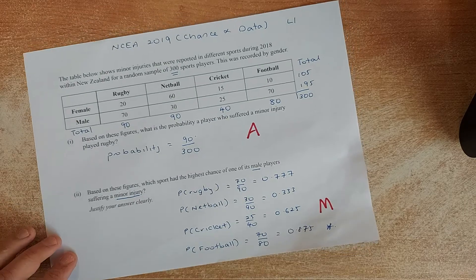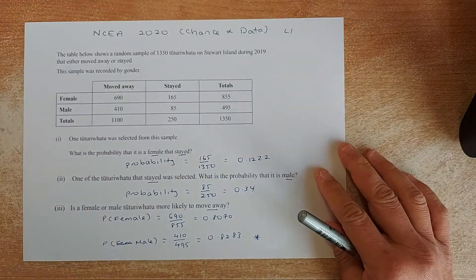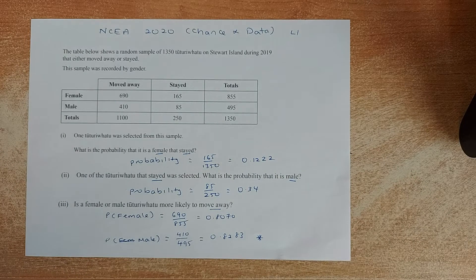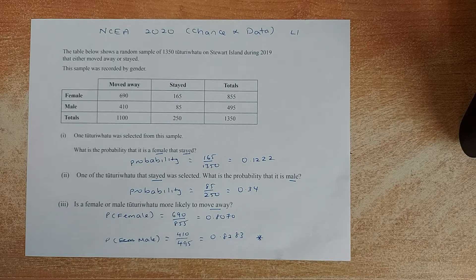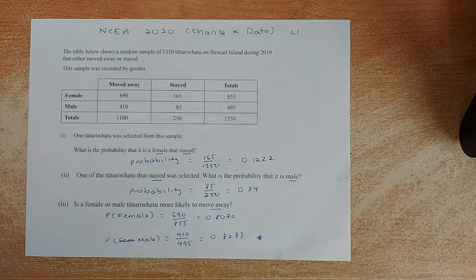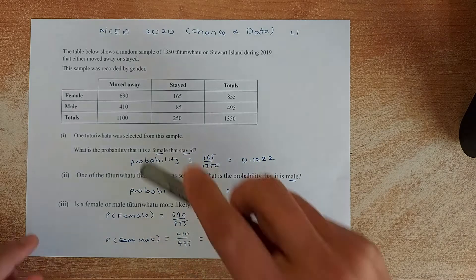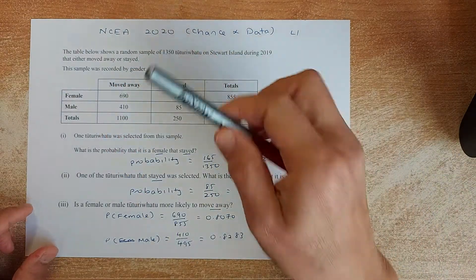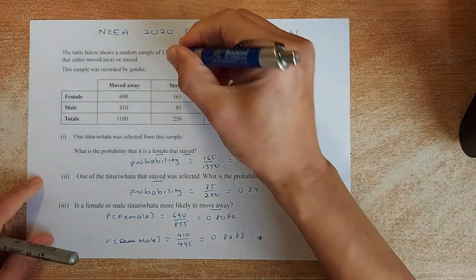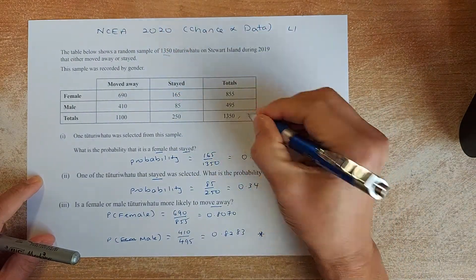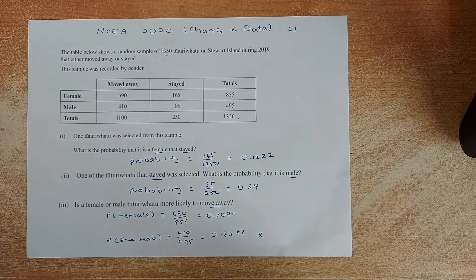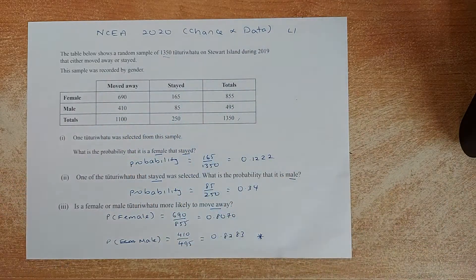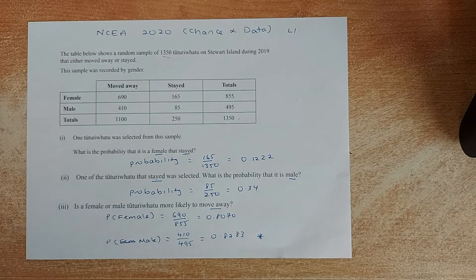So we shall do the following year, the 2020 exam, which was last year's exam. We read the question again. The table shows a random sample of 1,350 birds on Stewart Island during 2019 that either moved away or stayed. So either moved away or stayed, and they are recorded by gender, female and male. So the total is 1350, so the total here 1350 is the total number of birds. So this time the total, the row totals have been calculated and the column total has also been calculated. So you don't have to do anything.